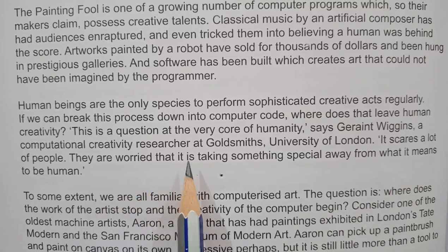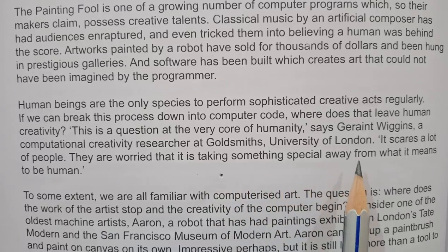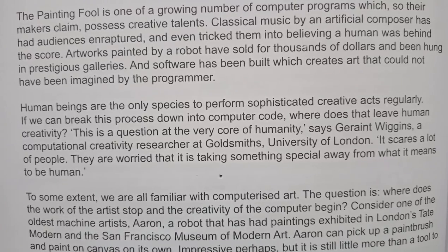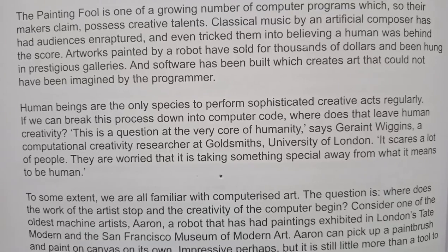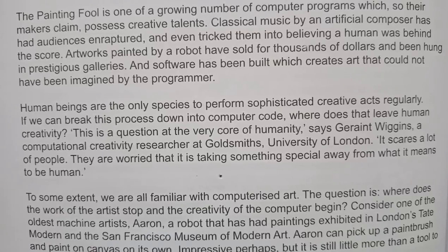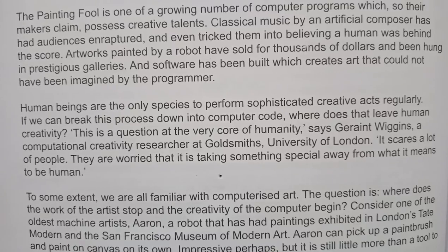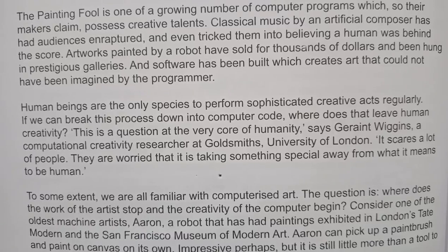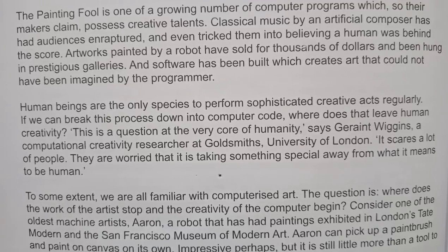They are worried that it is taking something special away from what it means to be human. So what does it mean to be human? The very basic existence of human being — their fundamental quality. Humans are special because they can do creativity, they can think, they can imagine. That is why they are different from animals. If this creativity is taken away by computer-based programs, then nothing will be left for humans to do. So humans are worried that the computer is superseding their creativity.